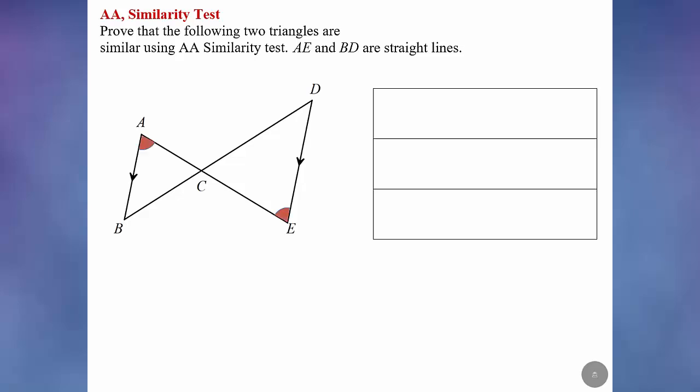Yes, angle BAC corresponds to angle DEC because of the alternate angles property. Angle ABC corresponds to angle EDC because of the alternate angles property as well. Angle ACB corresponds to angle ECD because of the vertically opposite angles property.